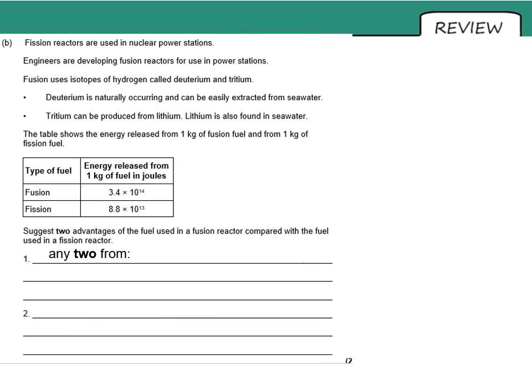And finally, two advantages of fuel used in fusion reactors compared with that in fission. So using the data in the question, this would be an example of rather than an inherent knowledge of it. So taking information from the data, easy to obtain, available in large amounts, releases more energy per kilogram. As you can see from the table, the fusion one, 10 to the 14 compared to 10 to the 13 joules. So a difference of a factor of 10 there per kilogram.